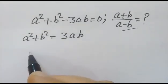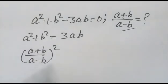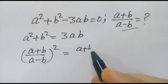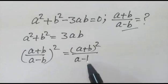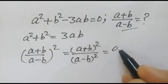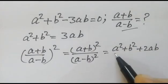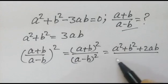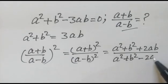Now we will take this: a plus b over a minus b, whole square, is equal to a plus b whole square over a minus b whole square, which equals a squared plus b squared plus 2ab over a squared plus b squared minus 2ab.